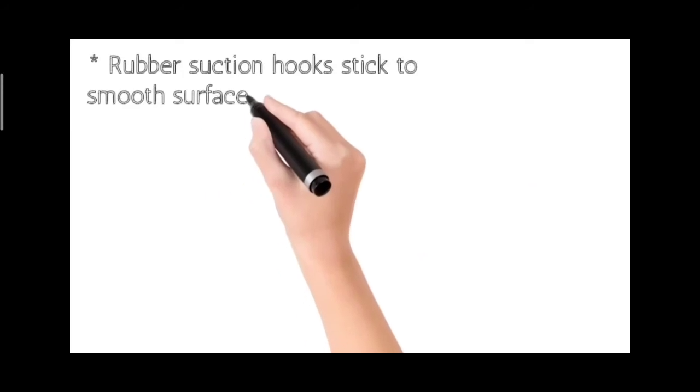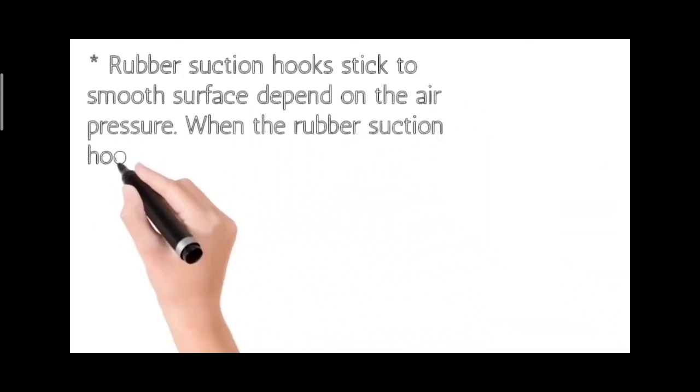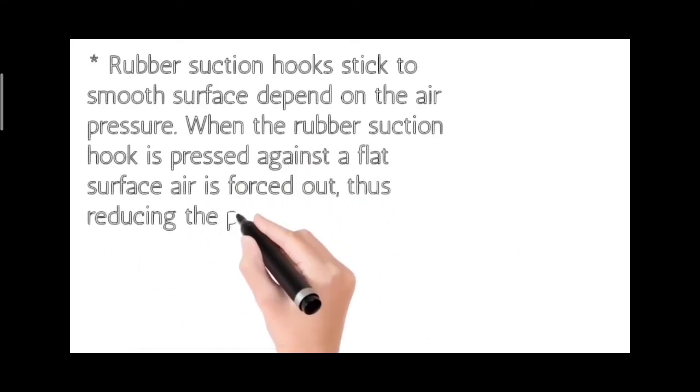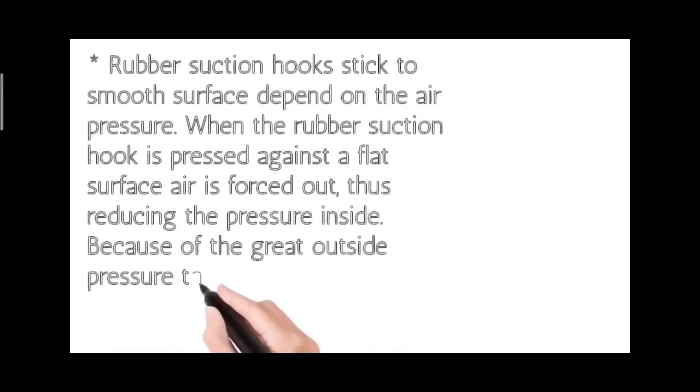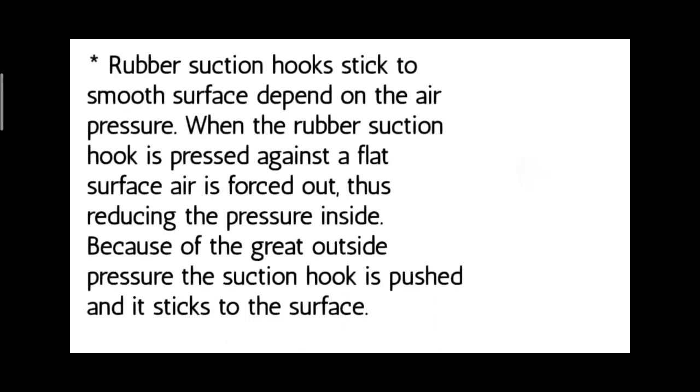Rubber suction hooks stick to smooth surfaces depending on air pressure. When the rubber suction hook is pressed against a flat surface, air is forced out, thus reducing the pressure inside. Because of the great outside pressure, the suction hook is pushed and it sticks to the surface.